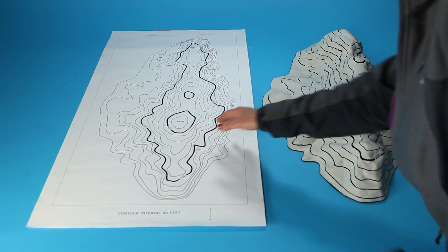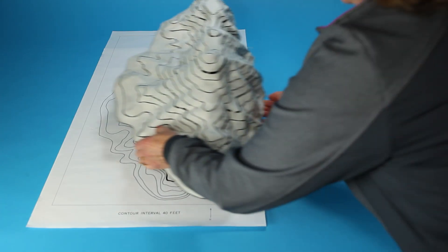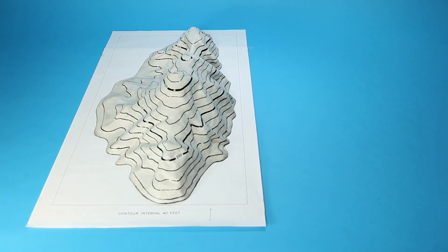These lines on the map are called contour lines, and they help to show the land's surface in three dimensions.